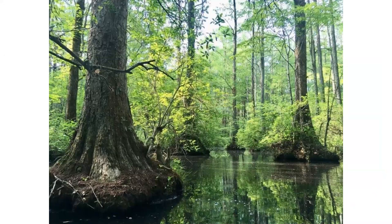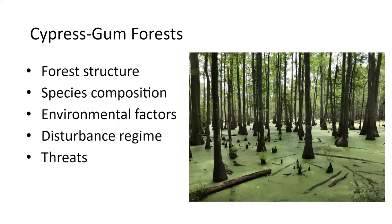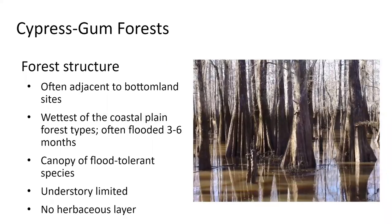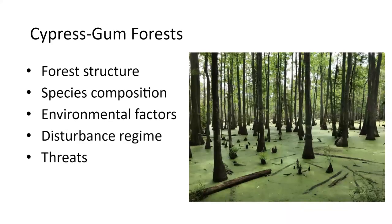Let's move on to our next forest type, which has a very recognizable structure. Even though this is a coastal plain forest type, this photo is taken in Wake County at Robertson's Mill Pond. For each of these forests I want you to understand the forest structure, species composition, environmental factors, disturbance, and threats. This next photo is taken in Craven County at the Cool Springs Environmental Center outside New Bern. The cypress gum swamp is this forest type — for now we're going to group them into broader categories.